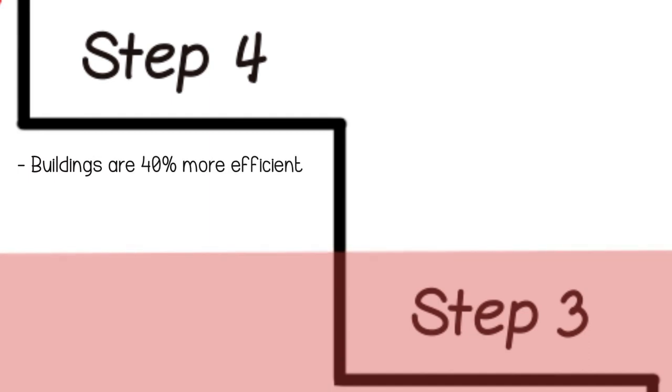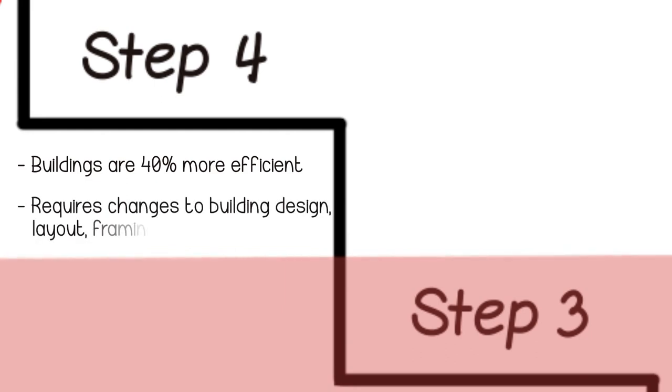Step four buildings will be required to perform at least 40% better than buildings built to the baseline of the BC Building Code. To achieve the upper steps, builders and designers will need to adopt a more integrated approach to building design. They will need to incorporate more substantial changes in layout, framing techniques, system selection, and materials.